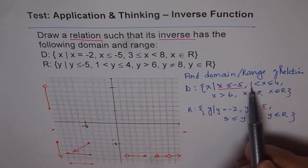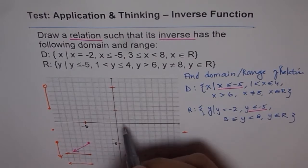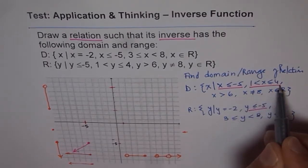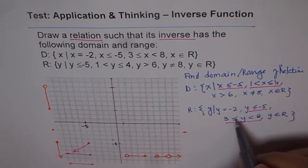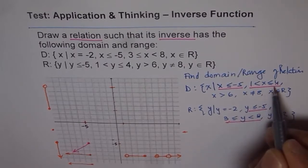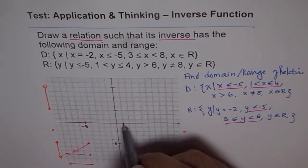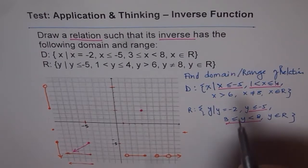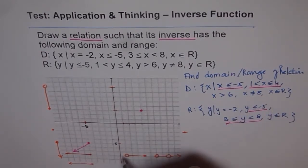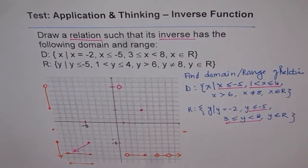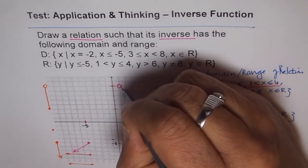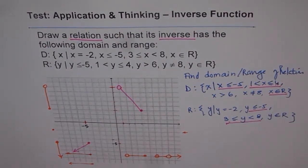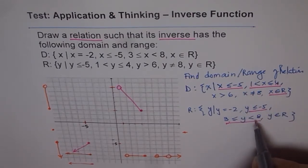Now for domain between 1 and 4: at x equals 4 the point is included, so the value there is y equals 3 — a solid point. At x equals 1 the value is y equals 8, which is not included — so an open circle. Joining them with a straight line means everything in between is included, with x belonging to real numbers. This takes care of the domain interval 1 to 4 mapped to the range interval 3 to 8.